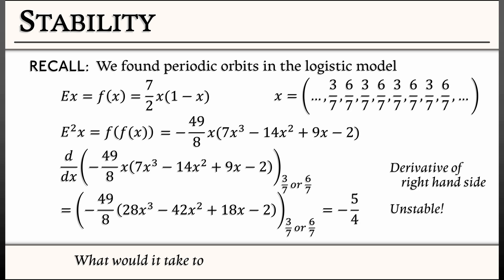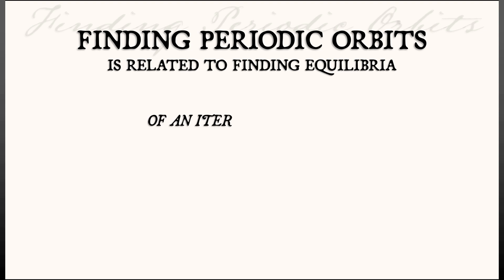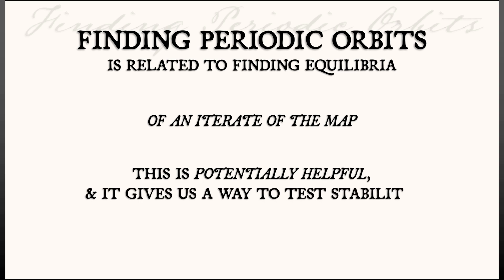Now, what would it take to show that that period 4 orbit is in fact a stable periodic orbit? I'm going to let you do the math on that one. The big idea is that finding periodic orbits is really the same thing as finding equilibria of an iterate of the map. Now, this is potentially very helpful as it gives us a way to test stability. We're not going to need this directly in what we're going to be doing, but remember this idea because it will come back.